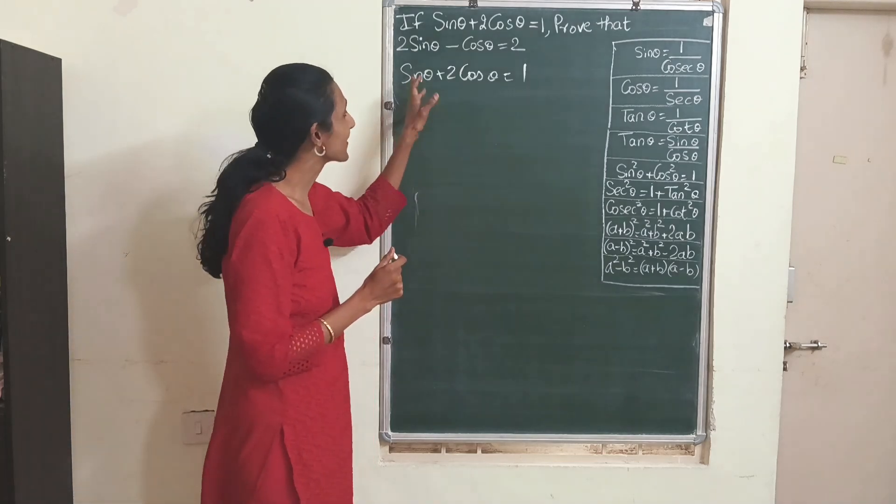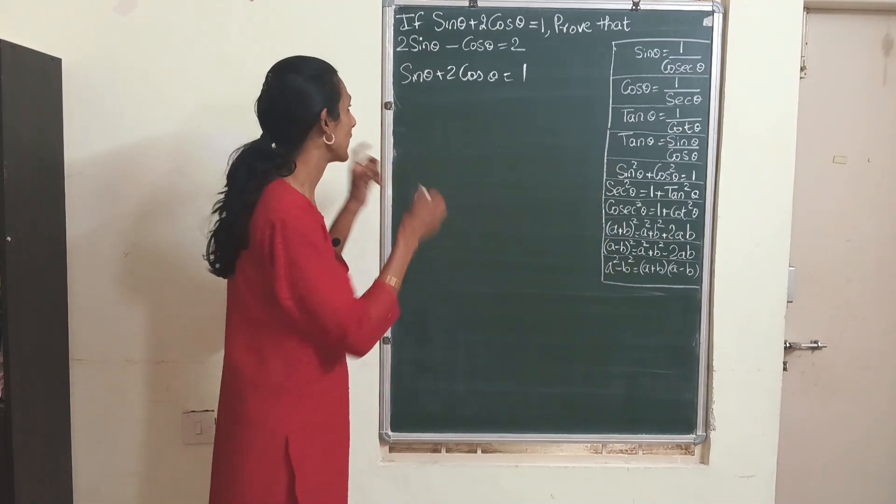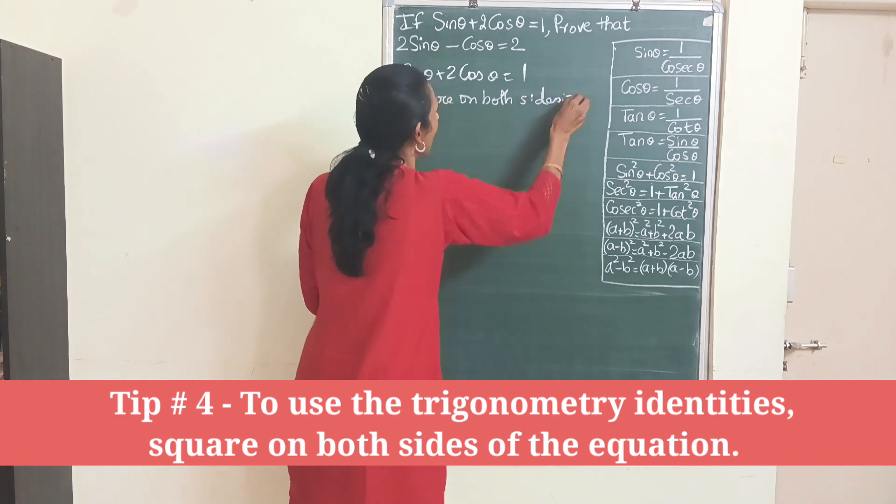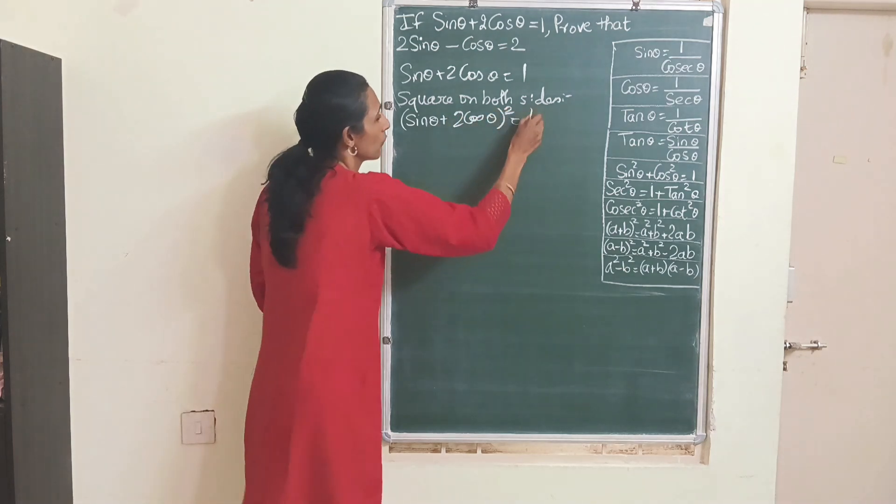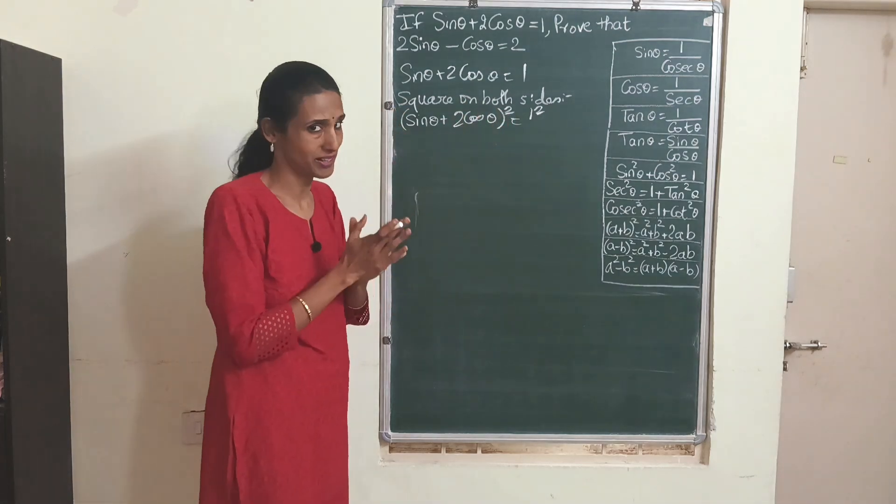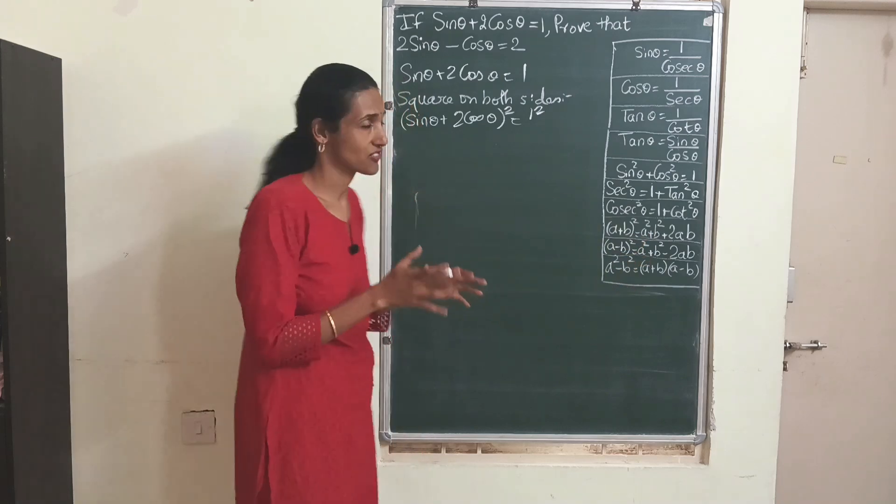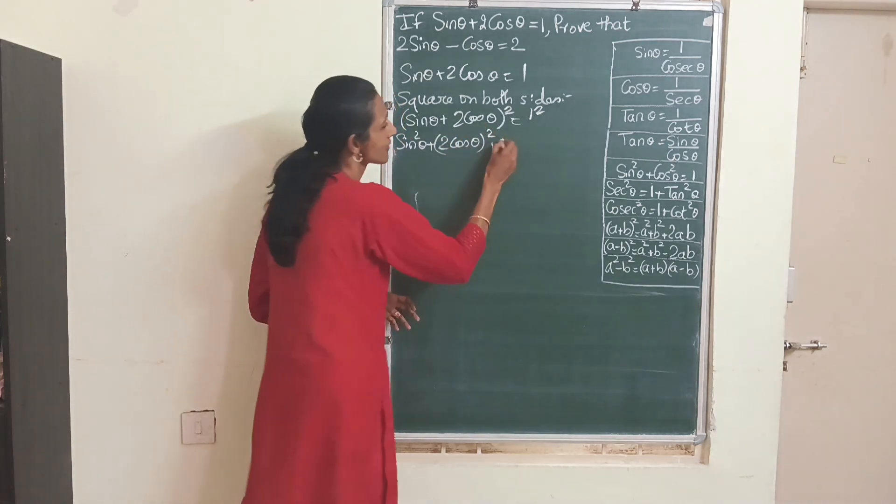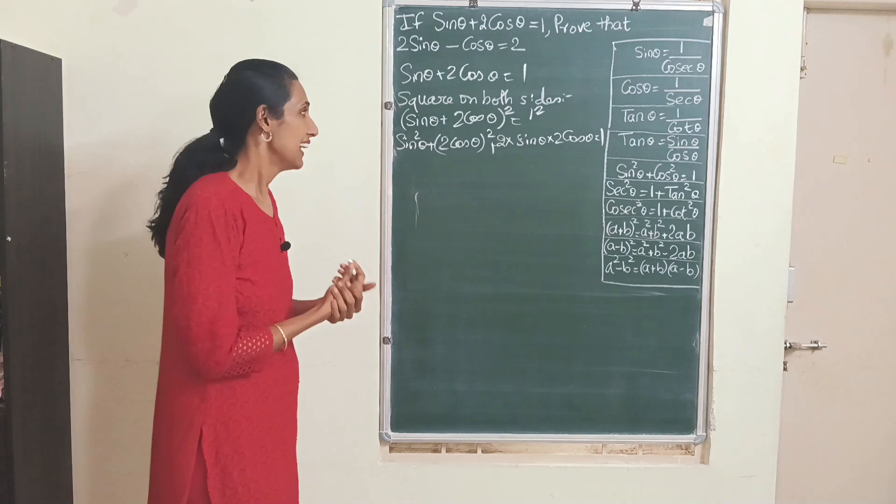The problem here is there is no sin square and there is no cos square. So in order to use identities we need to square. The next step is square on both sides in order to use identities. I'm going to square this entire thing equals 1 squared. It's not sin² θ plus 2 cos² θ, it is sin θ plus 2 cos θ the whole square. Which algebra identity does this look like? Yes, a plus b the whole square. We'll get sin² θ plus (2 cos θ)² plus 2 times sin θ into 2 cos θ equals 1.